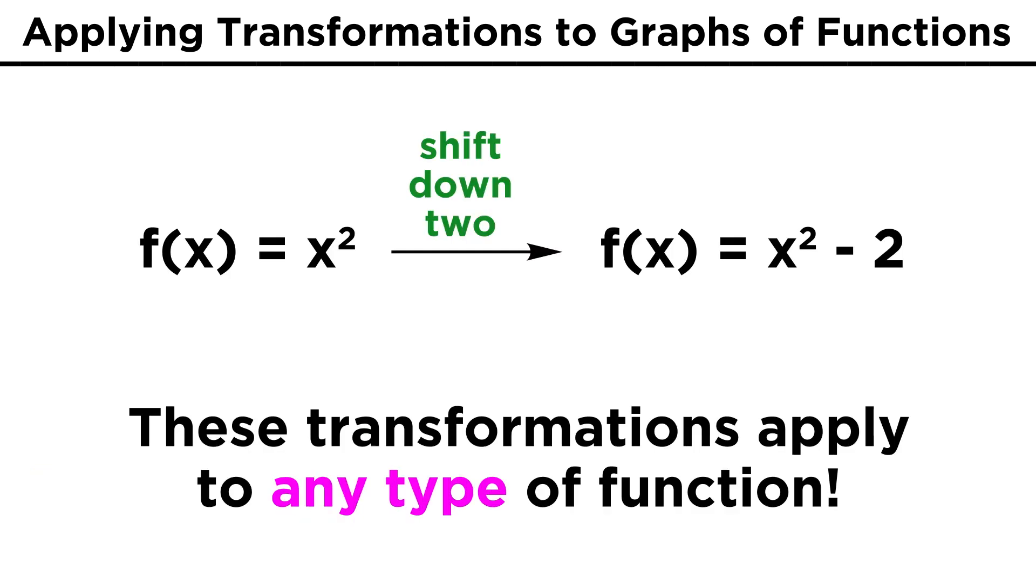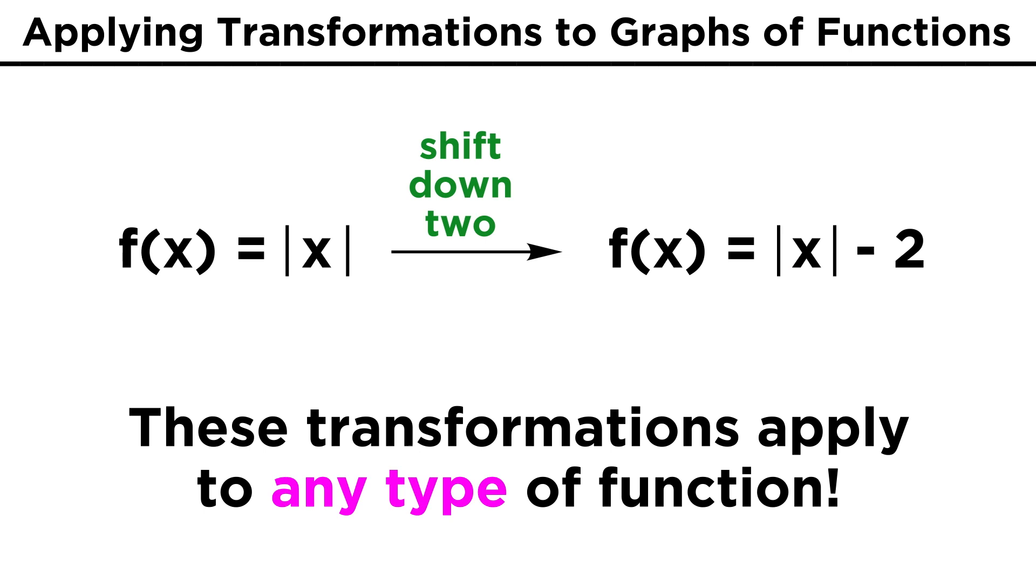The beauty of interpreting graphs in terms of these types of shifts is that they apply to graphs of any type. Just the way x squared minus two is x squared shifted two units down, we can say the same thing about absolute value of x minus two, or x cubed minus two, or the square root of x minus two.